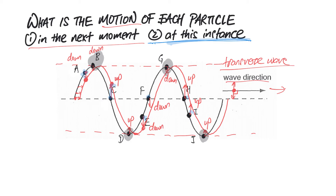The answer is different for particles at the crest or trough — like B, D, G, and J. At this particular instant, B is at the highest point, the crest or peak, so B is momentarily at rest. Likewise for D, G, and J — at this moment they are making a U-turn, so they have no speed and are momentarily at rest.